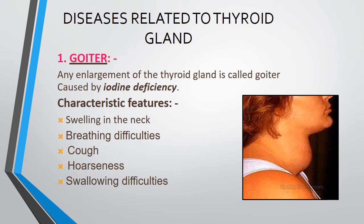Now we will see the diseases related to the thyroid gland. The first is goiter — it is enlargement of the thyroid gland. It is caused by iodine deficiency. Characteristics include swelling in the neck, breathing difficulty, coughing, hoarseness of voice, and swallowing difficulty.